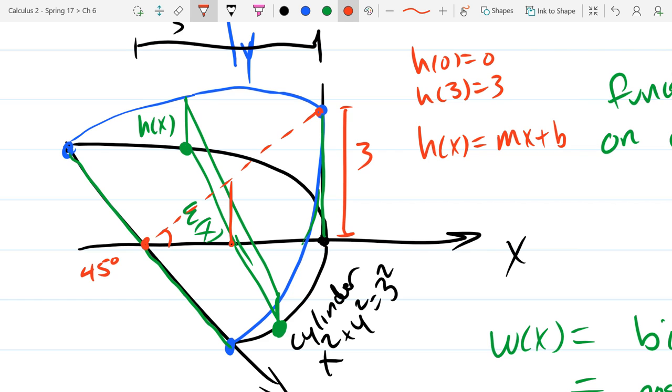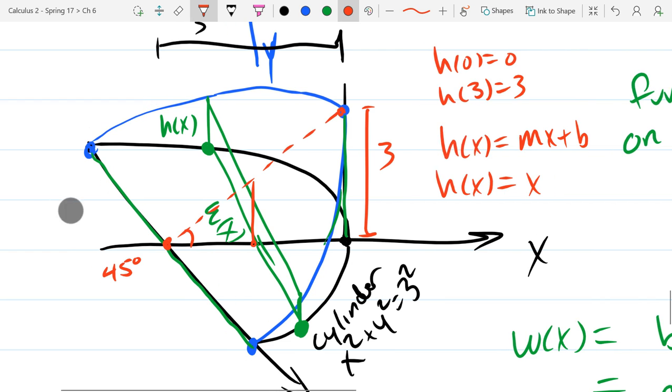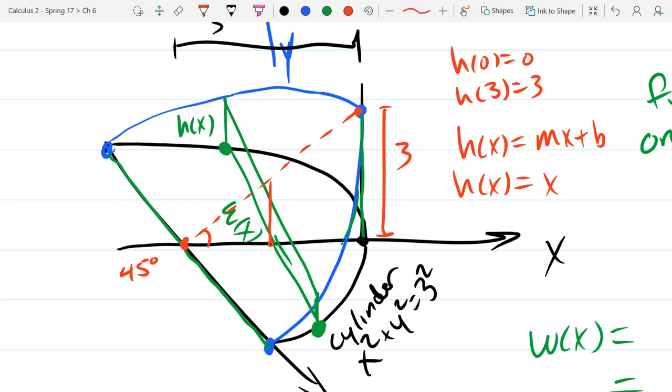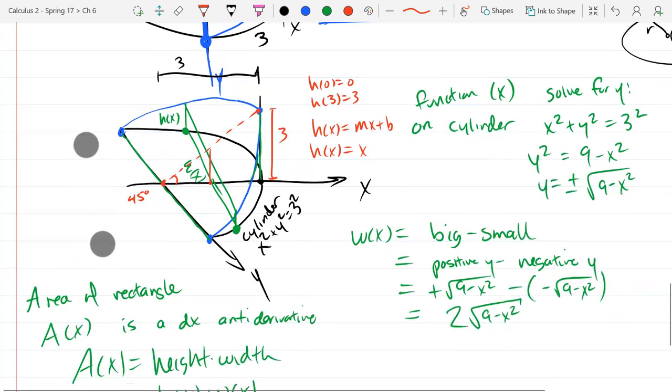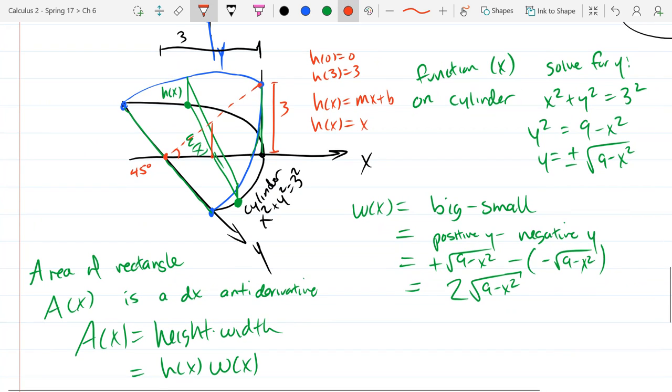So what is the intercept? Zero. You plug in zero, you got zero. And our slope, when I go over three, I go up three. So rise over run will be three over three. So our slope will be one. So h of x, our height function, is just the x value you're using. And this should make sense when you look at the graph here. I did my best to write the height in a meaningful way in the red pen right there. So you can see it starts at zero, it goes up to three. So there's our h of x function.